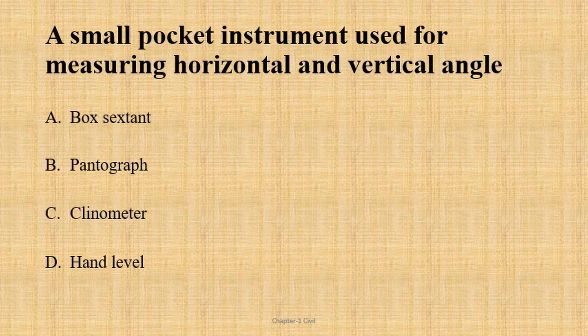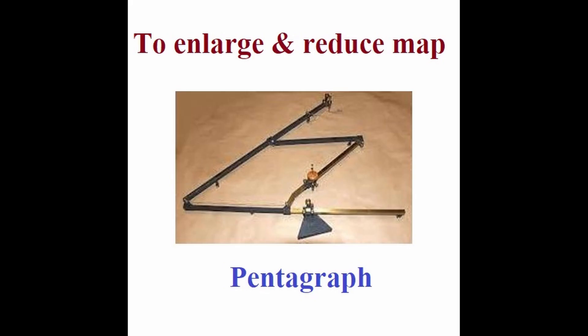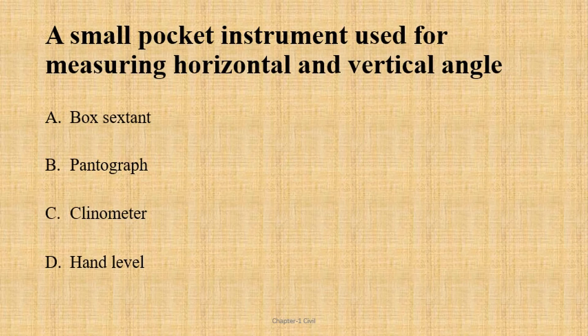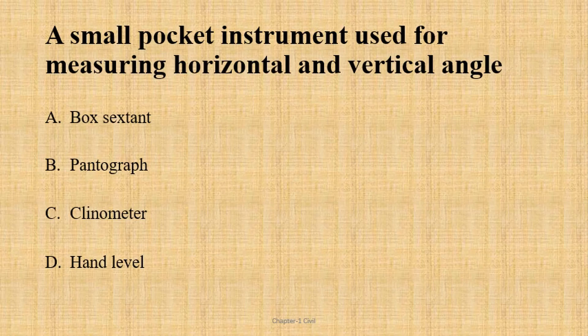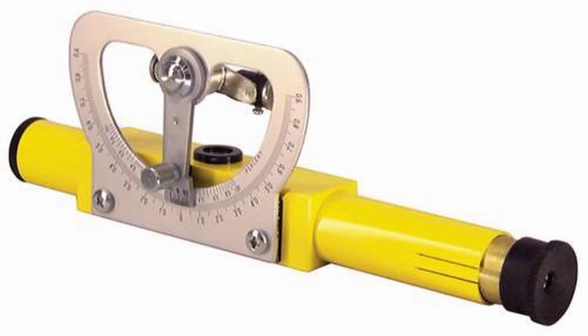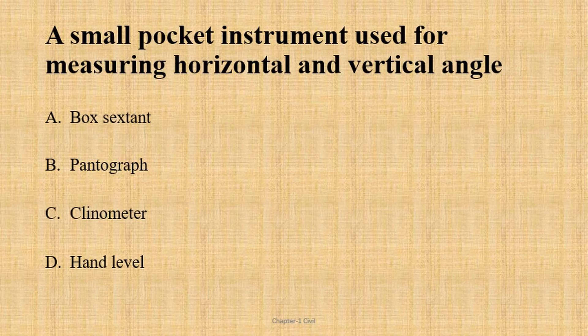Minor instruments include miniature instruments and minor objects. A small pocket instrument used for measuring horizontal and vertical angles is the clinometer. A pantograph is used for enlarging or reducing maps. The clinometer is a level instrument.